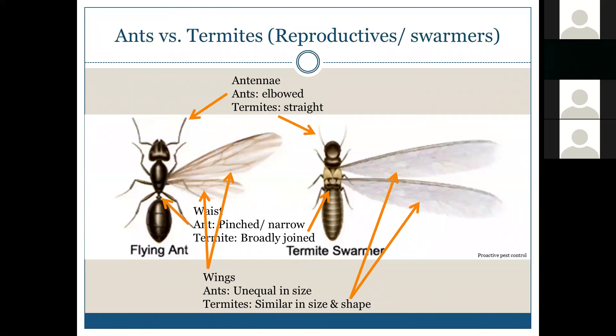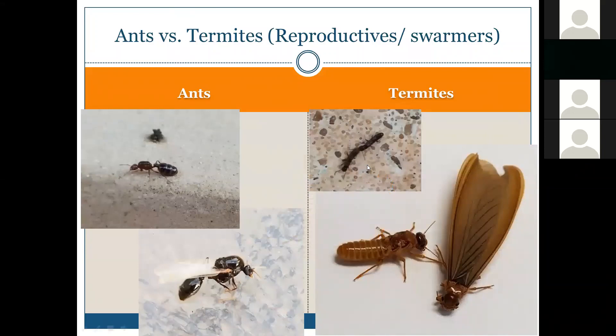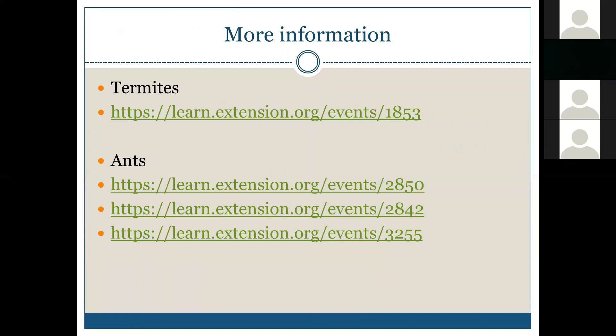Not always will you find them with wings — after the mating flight, both termites and ants often shed their wings. There are also previous All Bugs Good and Bad webinars you can search for more information on termites and on different types of ants, including fire ants, Argentine ants, and others.